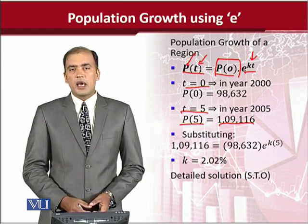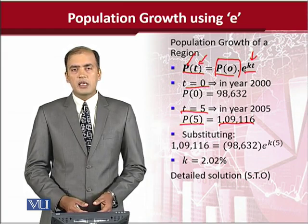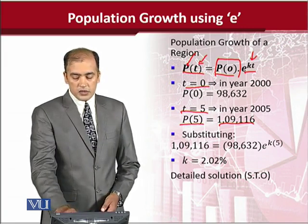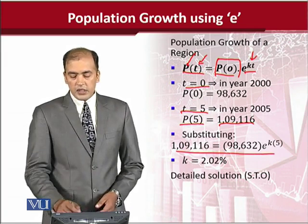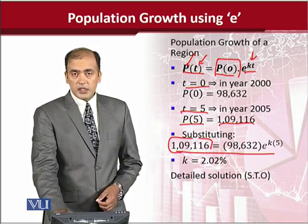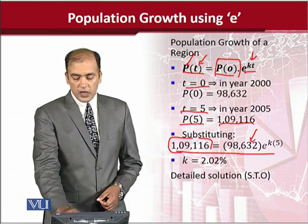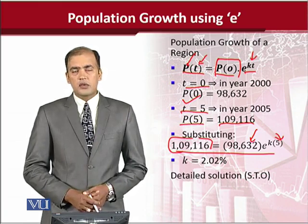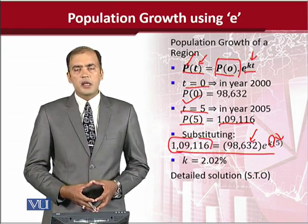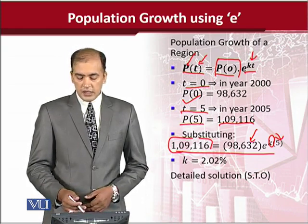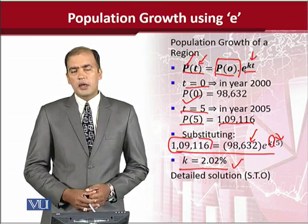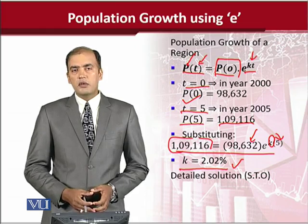These two values can actually help us to get to the value of k, which then can be used to forecast many other values. What we are trying to do is to put these values in the equation given above. This data allows us to get to the value of k. This is the value of the population after 5 years, this is P₀, and t is 5. After all the calculations, this is the answer.